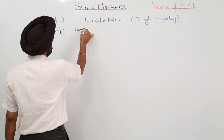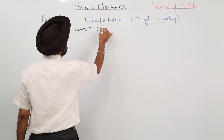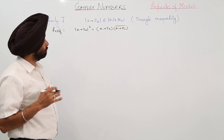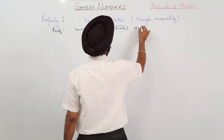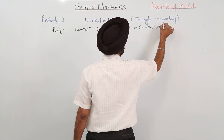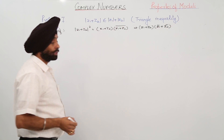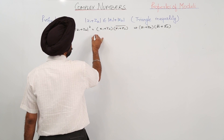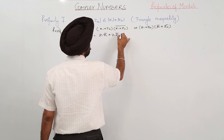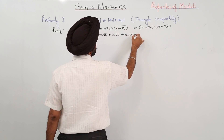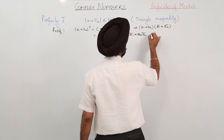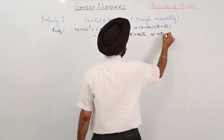We start with |z1 + z2|². This equals (z1 + z2) times the conjugate of (z1 + z2), using property 2. We expand this as (z1 + z2)(conjugate of z1 + conjugate of z2), giving us z1·conjugate(z1) + z1·conjugate(z2) + z2·conjugate(z1) + z2·conjugate(z2).